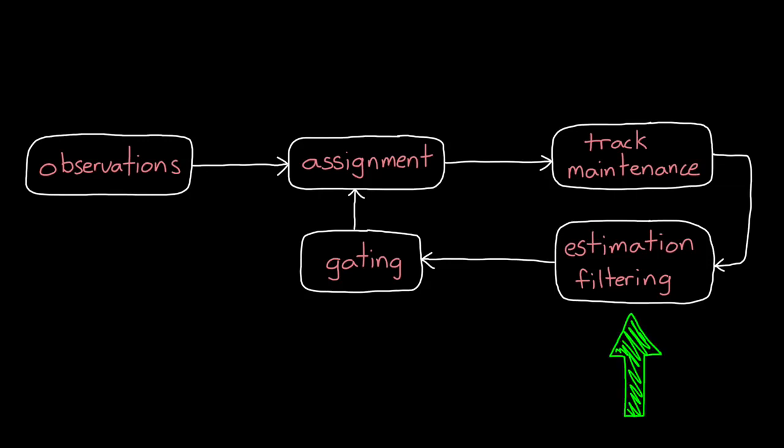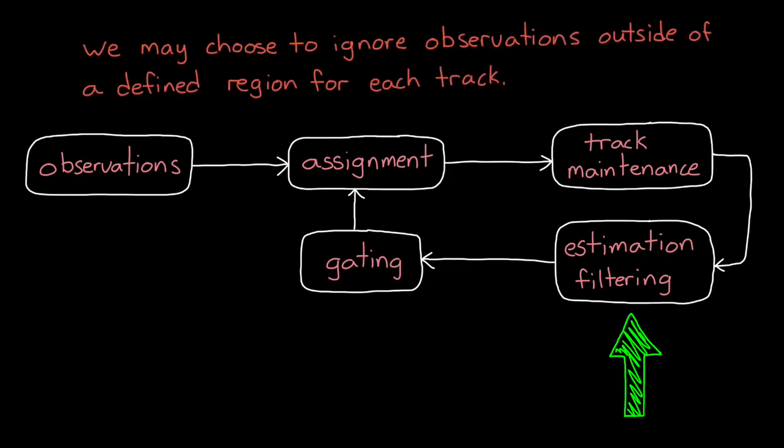However, it would be computationally foolish to look at every single observation and consider how likely it is to be assigned to every single track. Therefore, we may choose to ignore observations outside of a defined region for each track. This is called gating. And it's a screening mechanism that determines which detections are valid candidates to look at for assignment, and which should just be flat out ignored.